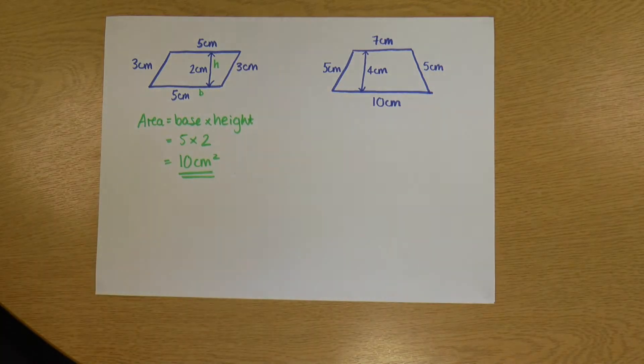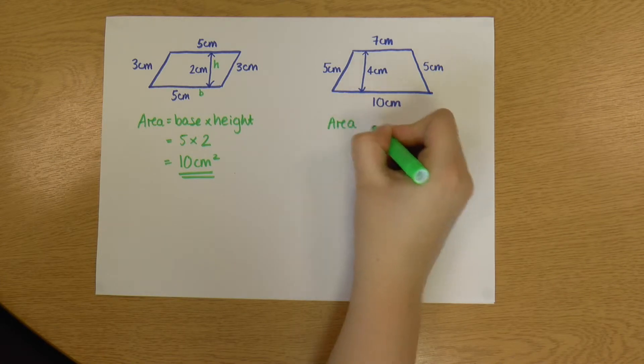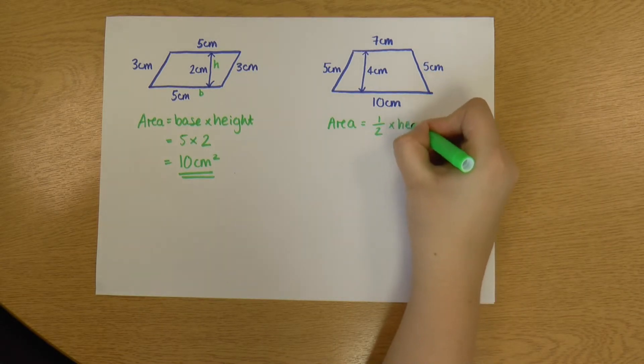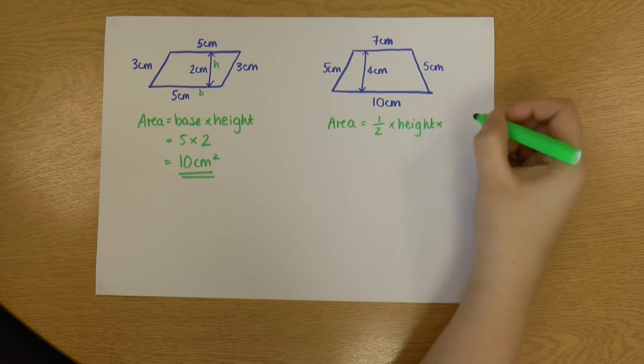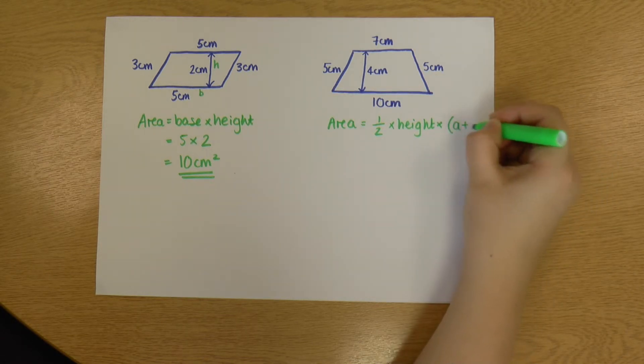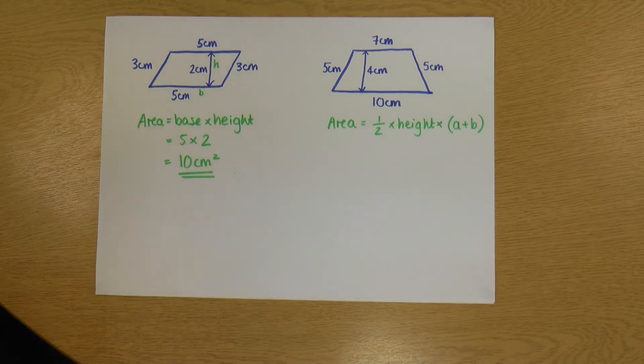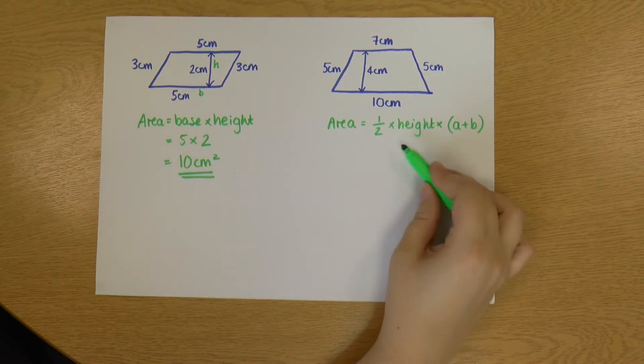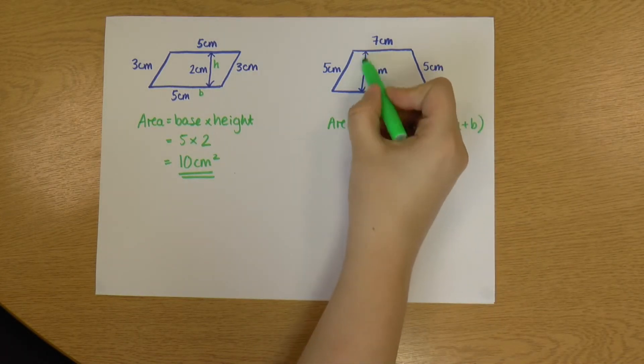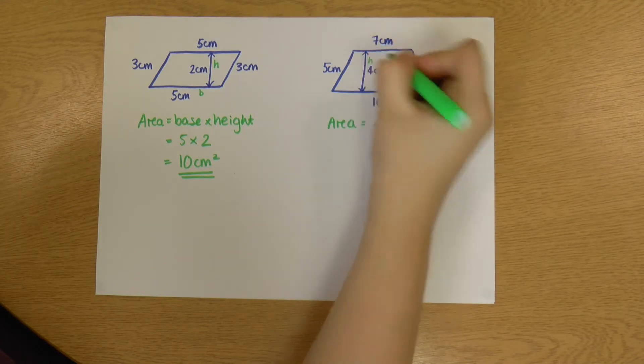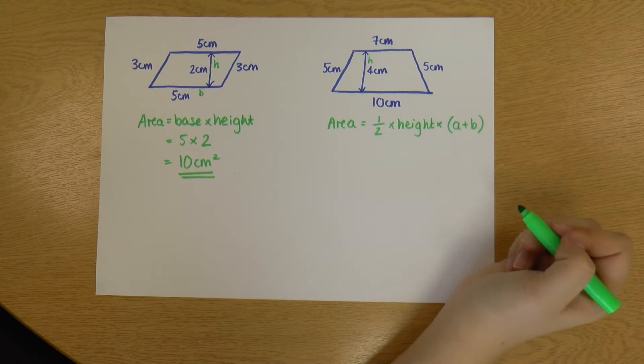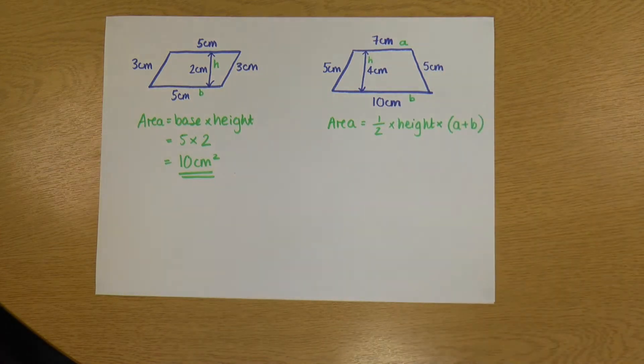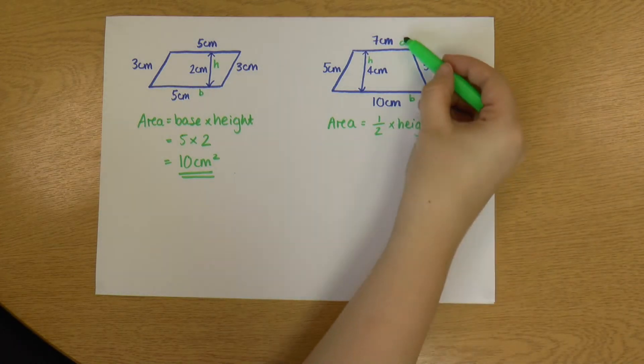Now let's look at the trapezium. With the trapezium, we have a formula to follow: half times height times a plus b. The height - we've already had practice identifying the height - is the length between the top and the bottom. It's this 4 centimeters here. That is our height. Our a and b: a is our top side and b is our bottom side.